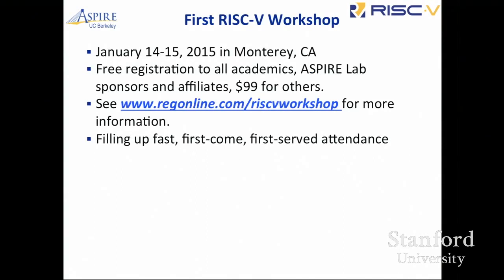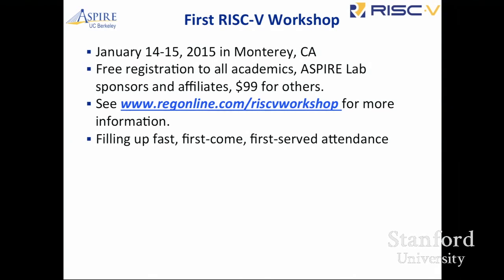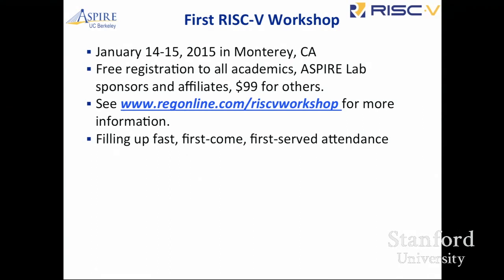To help build a community, we'll be setting up a non-profit foundation to promote and manage the ISA, help people implement it, and support the implementing community. We're going to have the first RISC-V workshop on January 14th-15th in Monterey at the Marriott. It's free to all academics — faculty and students — and open to anybody for $99, which basically covers the food bill. You can register online; if you go to risc-v.org you can get to it there. It's filling up surprisingly fast and it's first come, first served, so sign up soon.